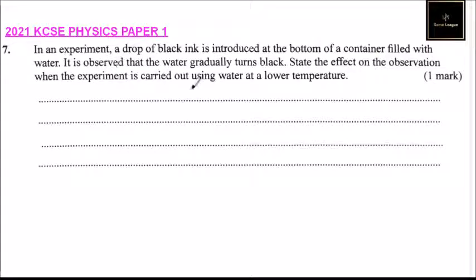It is observed that water gradually turns black as a result of diffusion. State the effect on the observation when the experiment is carried out using water at a lower temperature.